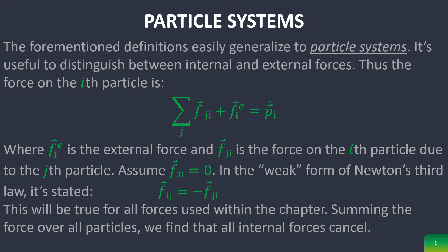The four mentioned definitions easily generalize to particle systems. It's useful to distinguish between internal and external forces. Thus, this right here is meaning, so this is actually supposed to say I, not J right here. So the sum of the Ith external forces acting on the Ith particle plus the force of the Jth particle acting on the Ith particle is equal to the total force. But due to the weak form of Newton's third law, the force on the Ith particle on the Jth particle is equal to the negative of the force on the Jth particle on the Ith particle. Because of this, we can assume for this chapter that all internal forces cancel, and so we only care about external forces right here.